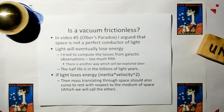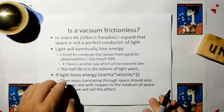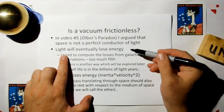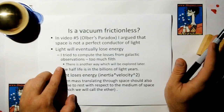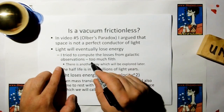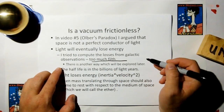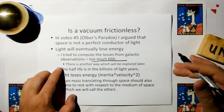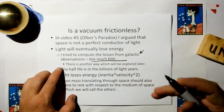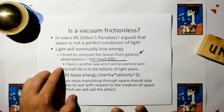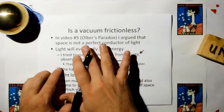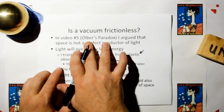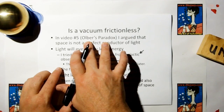Is a vacuum frictionless? In video number five, Olbers' Paradox argued that space is not a perfect conductor of light — light will eventually lose energy. I tried to compute the losses from galactic observations, but there was just too much noise to get any kind of realistic reading. There's another way to do it which will be explored later, but that new way requires us to believe in the aether. Even when you go back to the Olbers Paradox, you have to agree that the night sky should be much brighter than it is, which means there have to be losses to light.